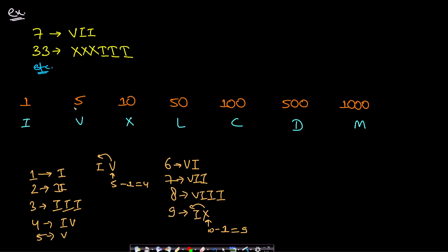Even though the standard notations are given, you will require one less value from each notation that should be a multiple of 10. For five you need four (IV), and for ten you need nine (IX). The lower tenth multiple of five is one, and the lower tenth multiple of ten is also one — that is why you need I before V and I before X.